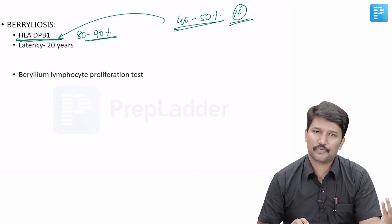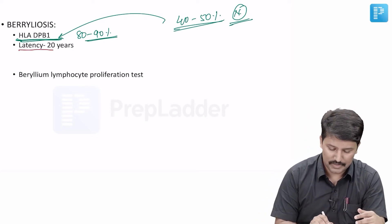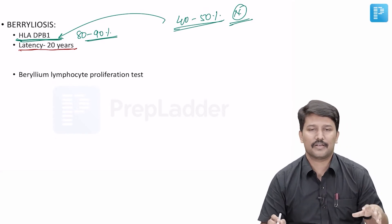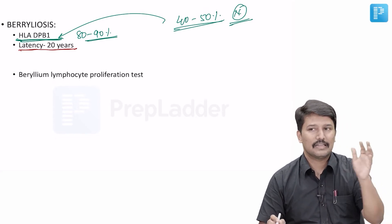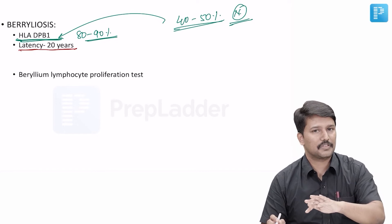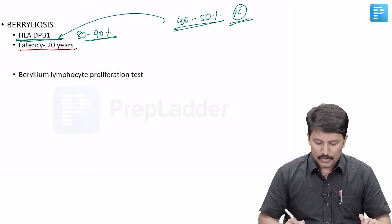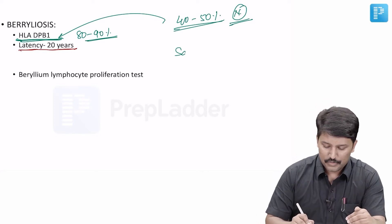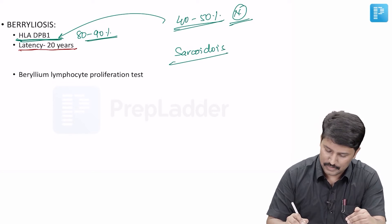Just like other forms of pneumoconiosis, berylliosis is also associated with a significant latency period. A minimum of 20 years latency is seen after initial exposure before manifestations of symptoms start appearing. Berylliosis also typically resembles sarcoidosis.